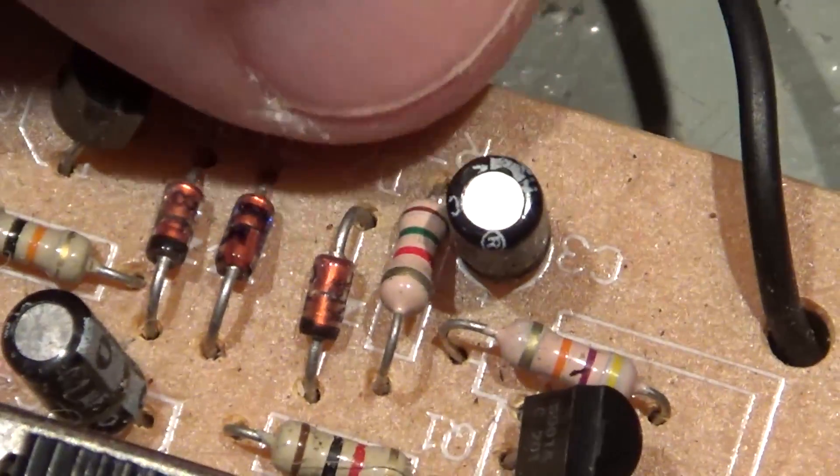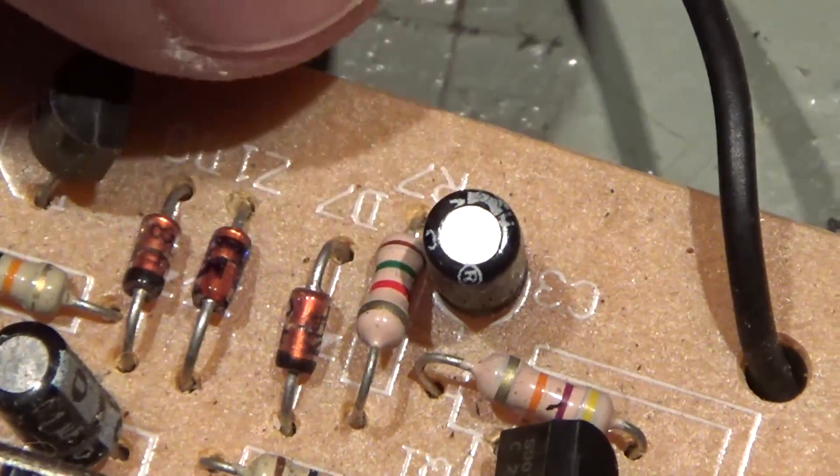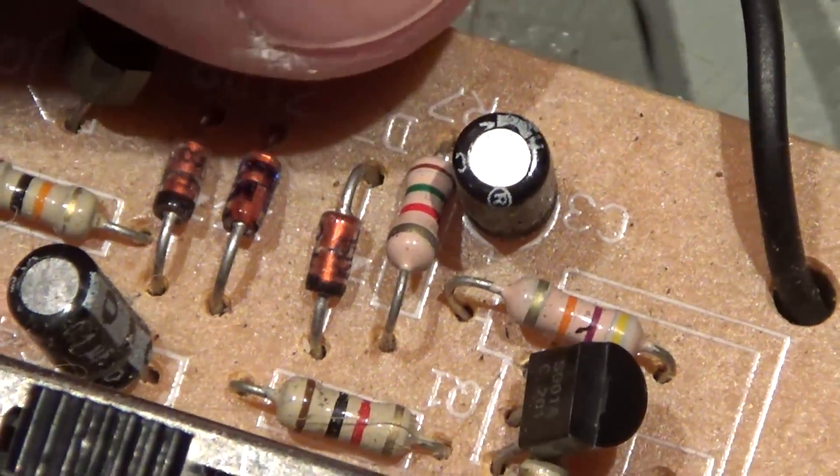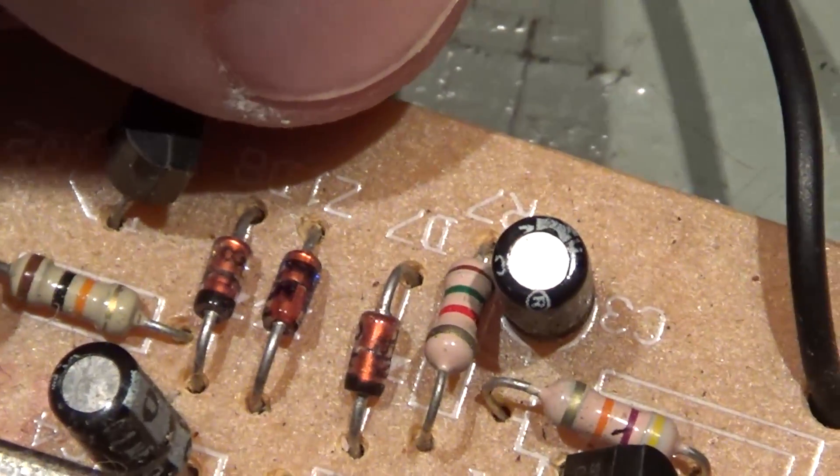And with the red one I'll touch on its positive leg, which is the one to the side where you have a black ring.